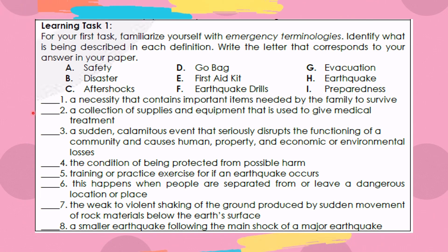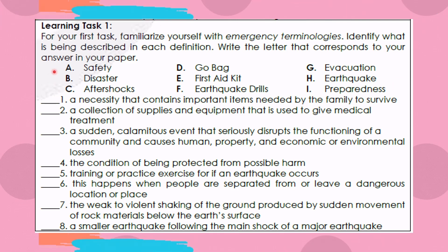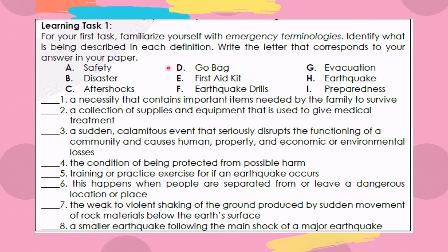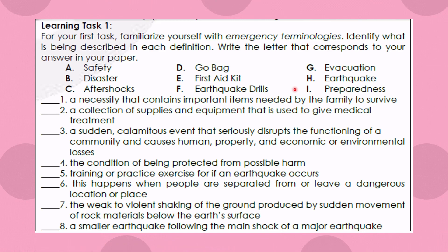You are going to identify what is being described by choosing the answer from these emergency terminologies. Letter A: Safety. B: Disaster. C: Aftershocks. D: Go Bag. E: First Aid Kit. F: Earthquake Drills. G: Evacuation. H: Earthquake. And I: Preparedness.